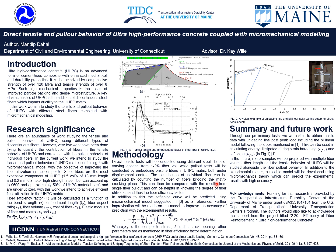Both tests will be done at displacement control, and using this, the contribution of individual fibers can be calculated by counting the number of fibers bridging the cracking plane. This can be compared with the results from the single fiber pullout test and can be helpful to know the degree of fiber utilization and in turn calculate the fiber efficiency factor. The experimental results will also be predicted based on a micro-mechanical model, where the composite strength is a function of the fiber embedment length, inclination angle to the loading axis, and crack opening, with the integration carried out considering all fibers which bridge the cracking plane.